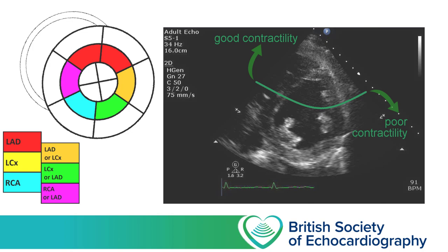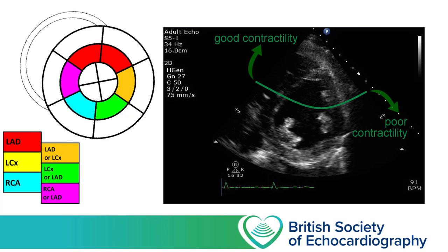Let's take a look at an example. In this parasternal short axis image at the mid-level, the anteroseptal and anterior segments have the best function, whilst there's very little thickening or motion in any of the other segments. This is from a patient with a previous inferior myocardial infarction who has acutely occluded their left circumflex, and is entirely dependent on segments supplied by the LAD for their LV systolic function.